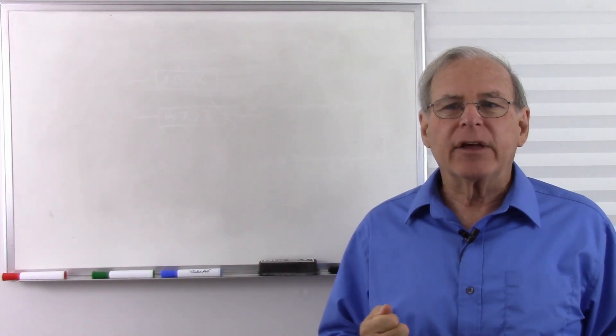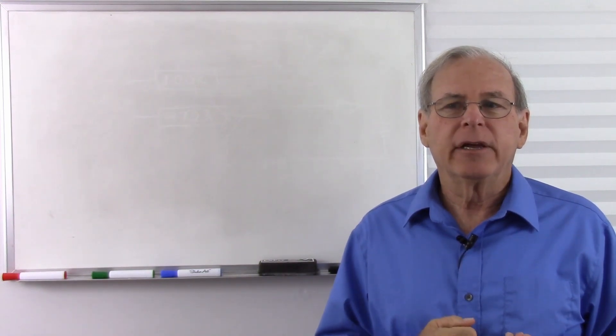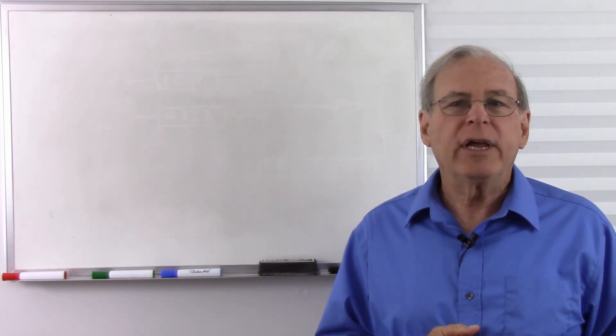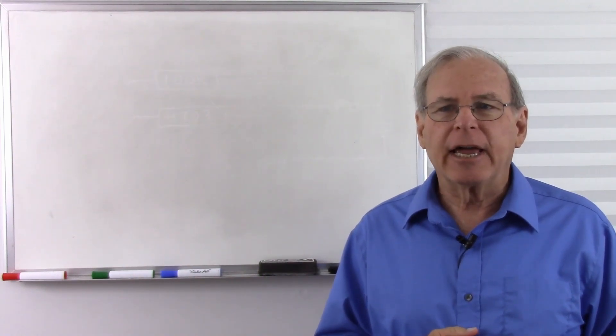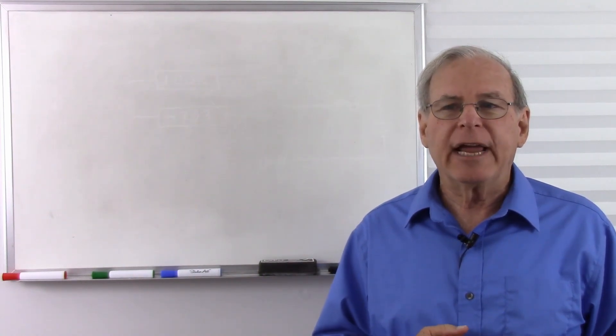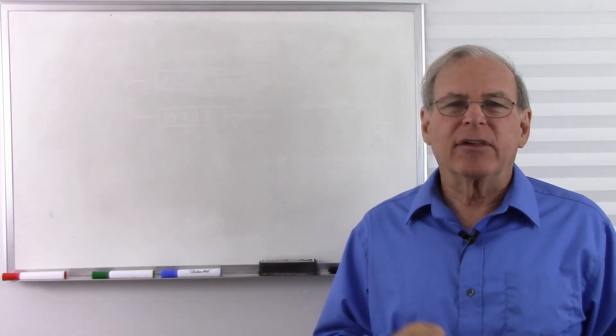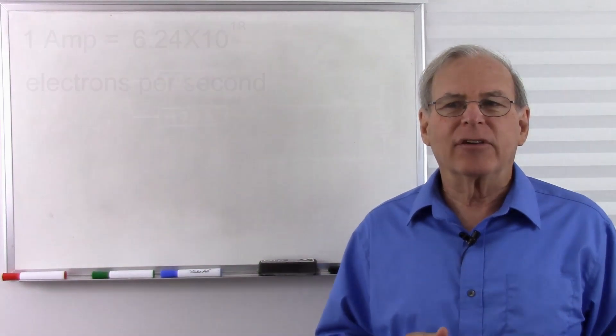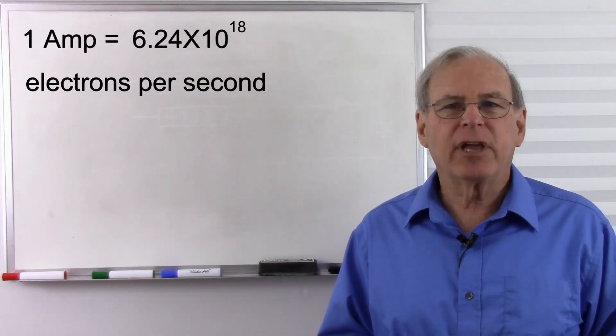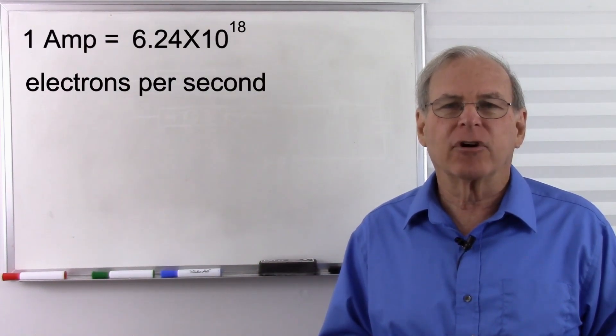And that number is 6 septillion, 241 quintillion, 509 quadrillion, 480 trillion electrons per second. Now just to make this easier, we usually define this as 6.24 times 10 to the power of 18 electrons per second.